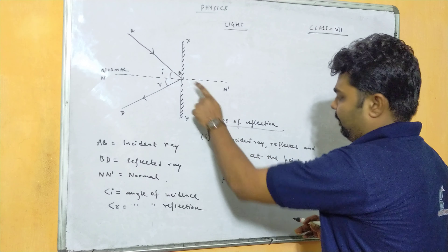A plane mirror is used to form the image of any object. In the diagram, I have placed one object. An object can be anything — like a table or a chair. I have considered one object whose image we want to find from the plane mirror.